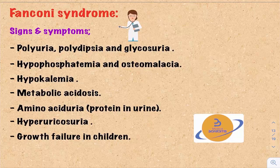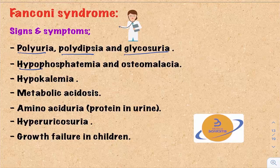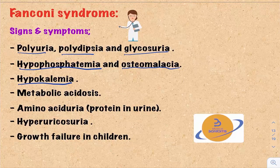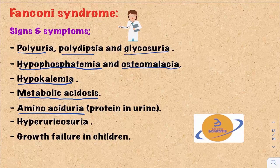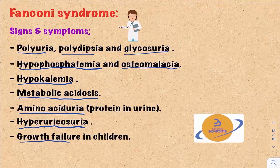The loss of sodium and glucose in the urine leads to polyuria and polydipsia. Glycosuria means appearance of glucose in the urine. Hypophosphatemia — loss of phosphate — leads to osteomalacia. Hypokalemia results from loss of potassium. Metabolic acidosis results from loss of bicarbonate. Aminoaciduria results from loss of amino acids. Hyperuricosuria means high uric acid in the urine. All of these together lead to growth failure in children.